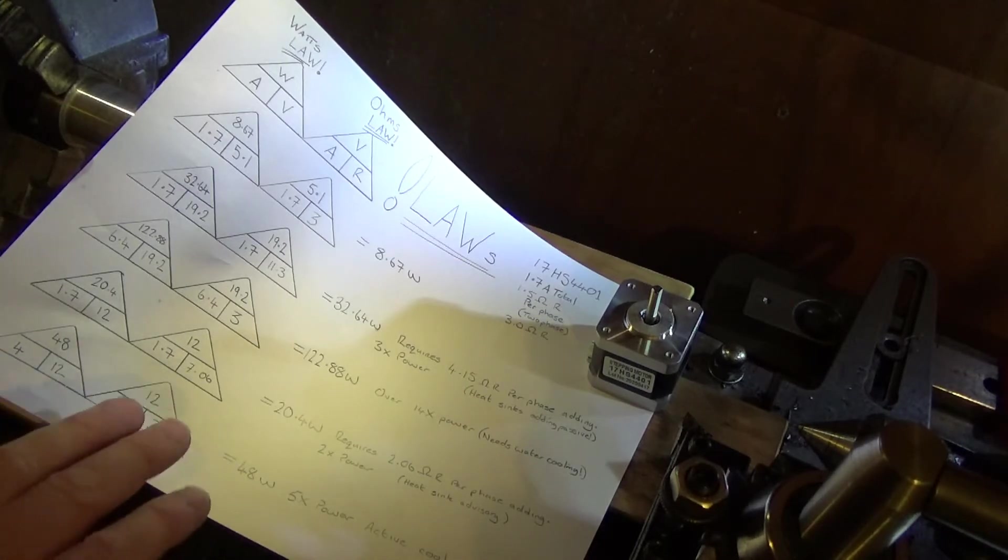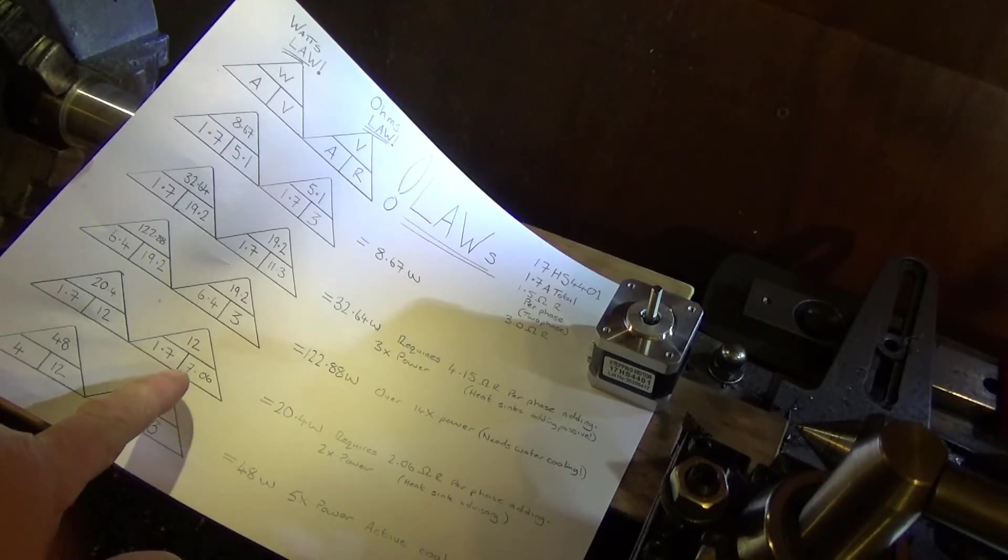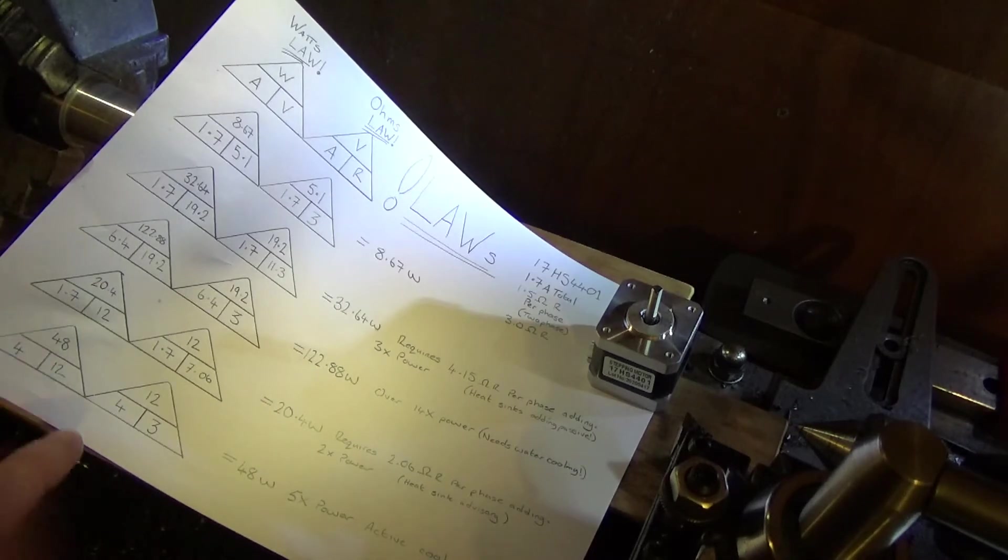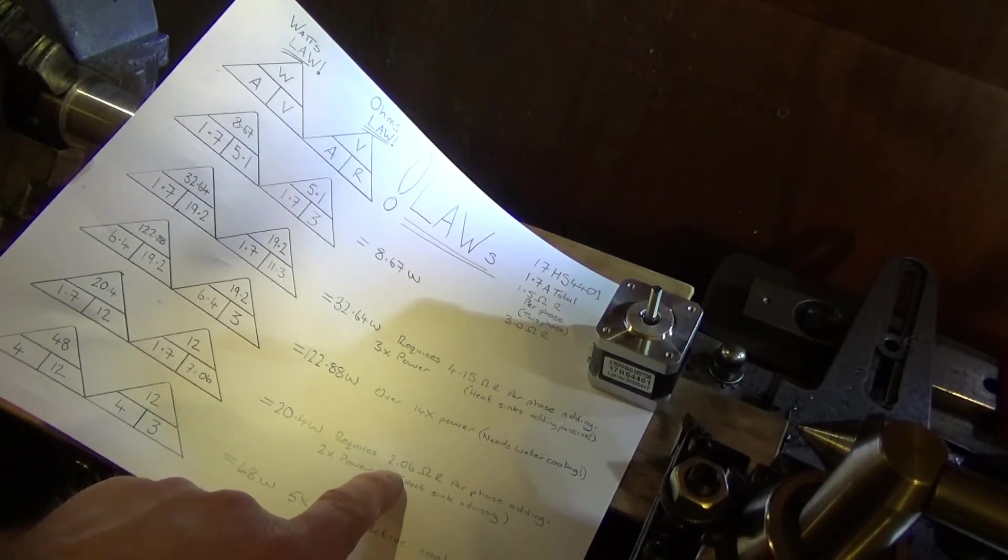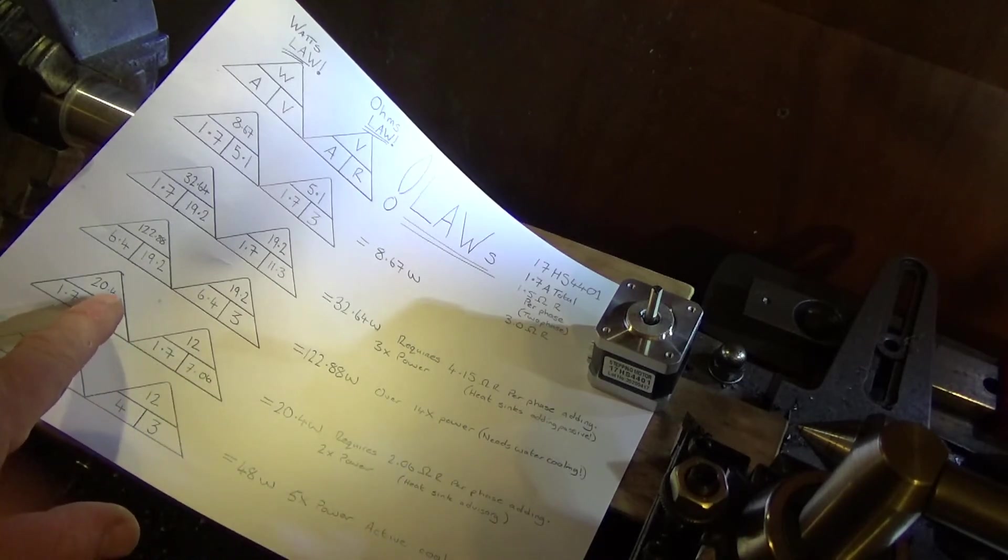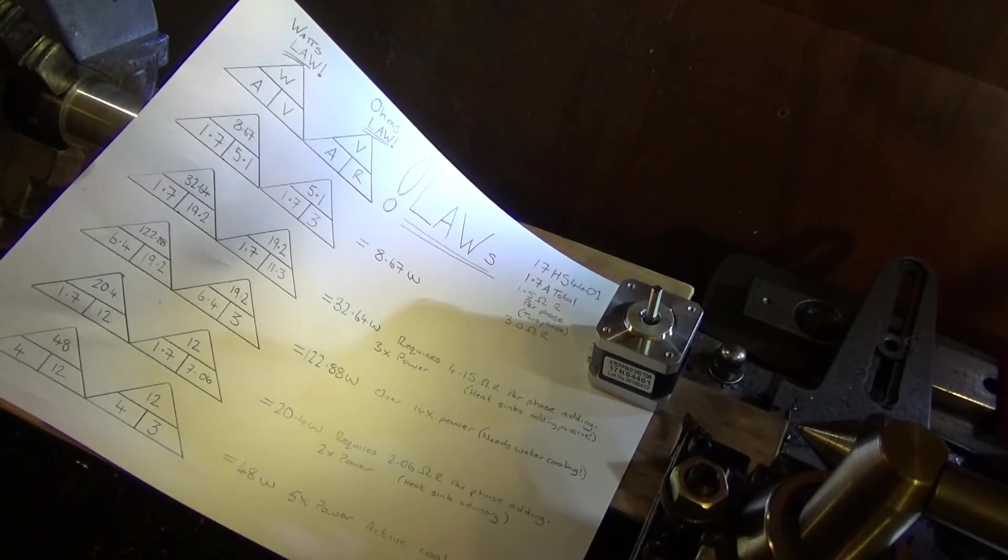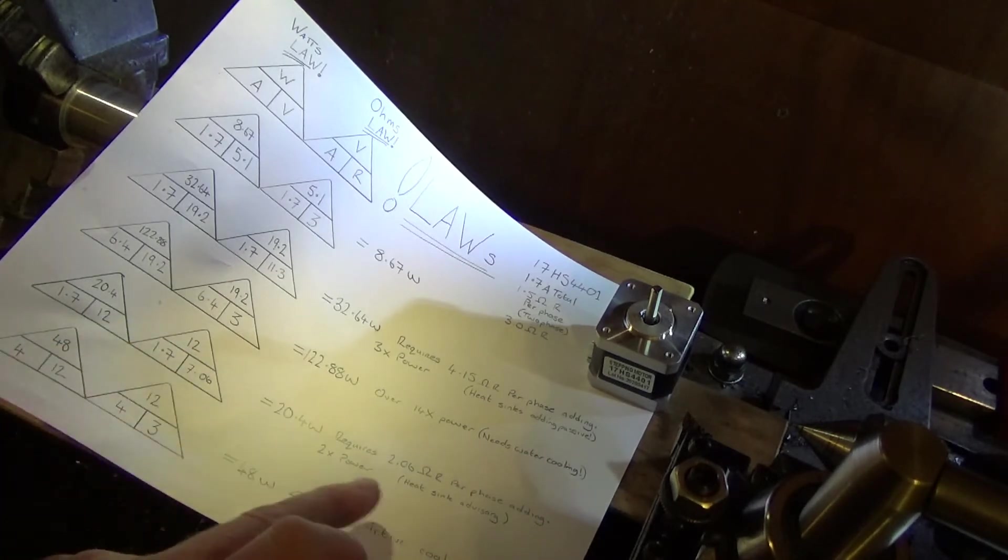Since the standard rating is 8.67 watts, that would be five times the power running through those circuits and they're going to get hot. You definitely need some kind of active cooling to stop it from overheating. Now let's say for instance you use your stepper motor drivers and you limit the amperage to 1.7 amps. At that point then you would want a resistance of 7.06 ohms and you haven't, you've only got 3 ohms. I've measured it, it is 1.5 ohms per phase.